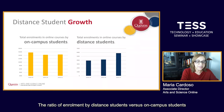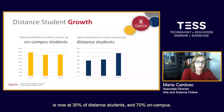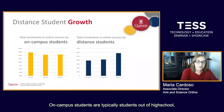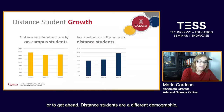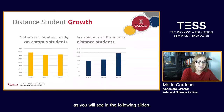The ratio of enrollment by distant students versus on-campus students is now at 30% distant students and 70% on-campus. On-campus students are typical students out of high school doing their degree full-time, taking online courses to manage their timetable or to get ahead. Distant students are a different demographic, as you will see in the following slides.